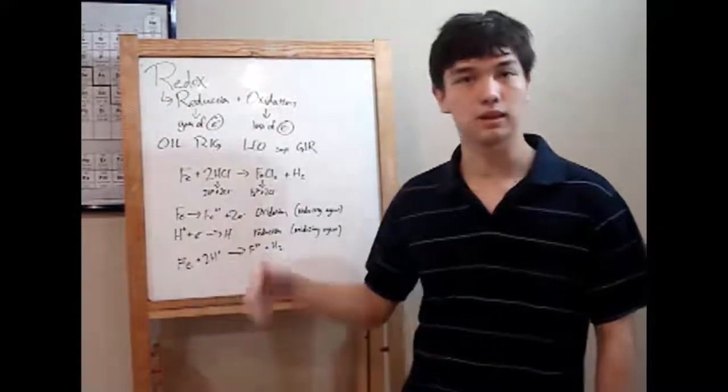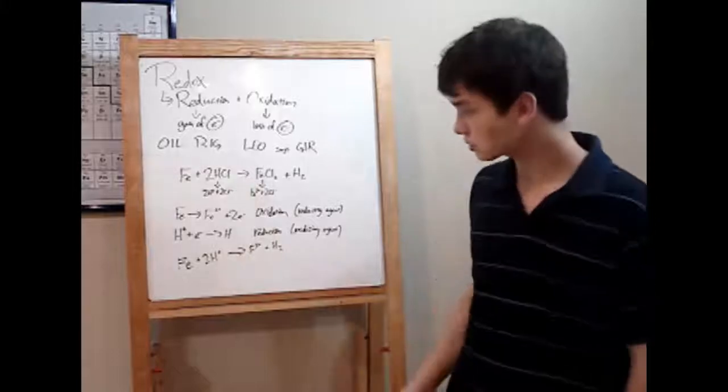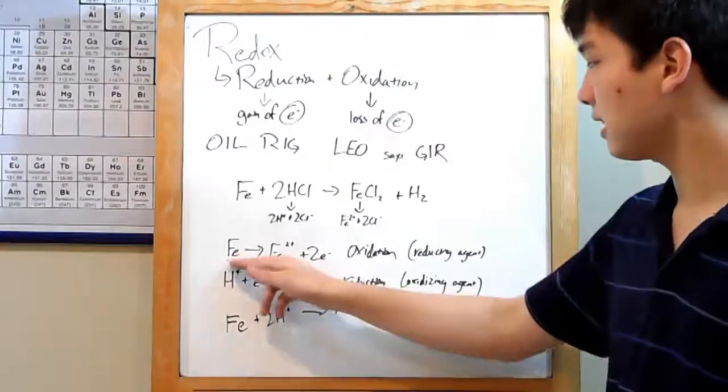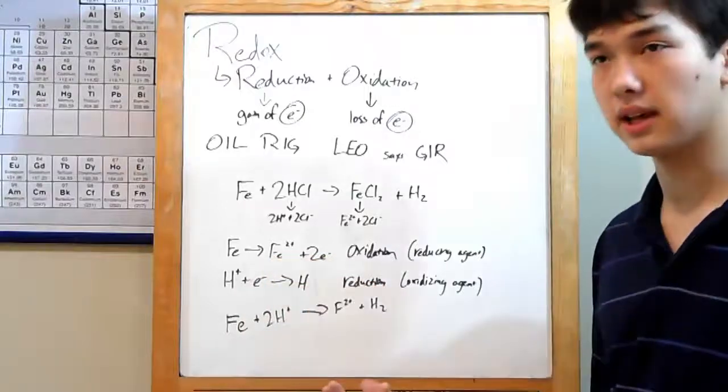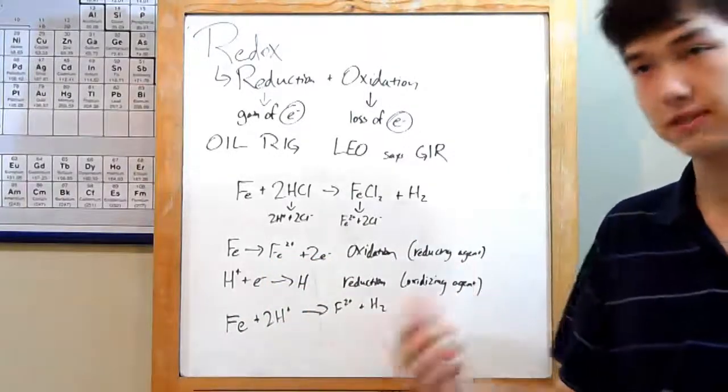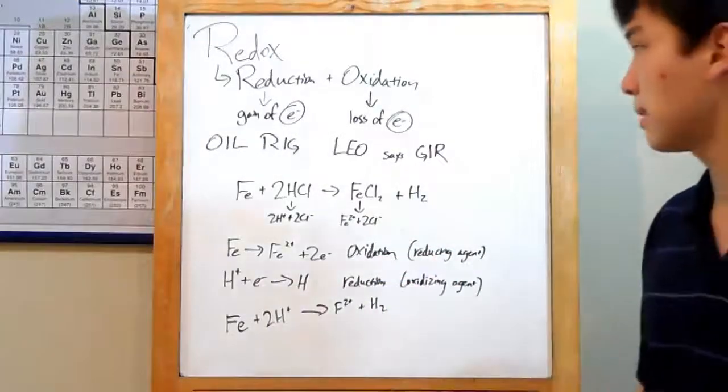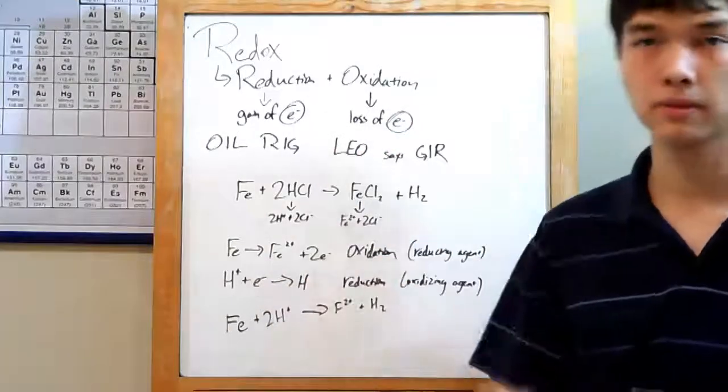Fe had to be the one losing electrons, because it got a positive charge. We can write out a half reaction for that here. Fe yields Fe2 plus and 2 electrons. Losing 2 electrons means it'll have 2 more protons than electrons for a total 2 plus charge. That's oxidation, remember, because that's a loss of electrons.